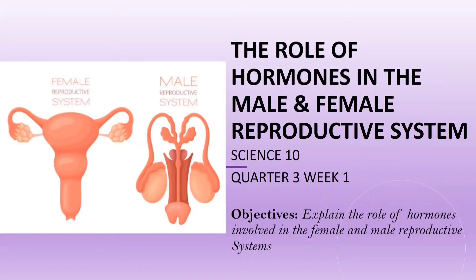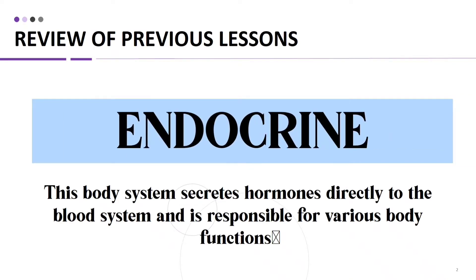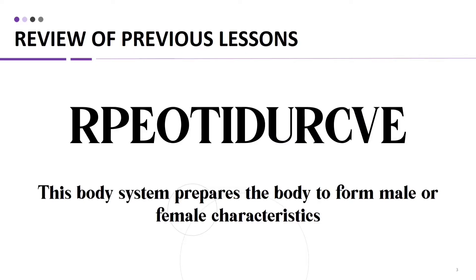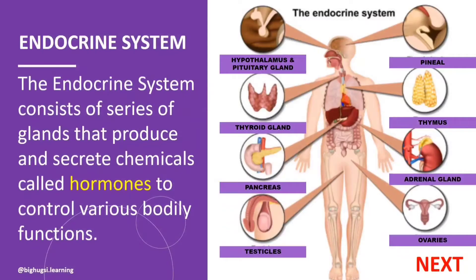Now let us review our previous lessons. Arrange the letters to form a word. This word means that this body system secretes hormones directly into the blood system and is responsible for various body functions. The answer is endocrine. Next word: it means that the body system prepares the body to form male and female characteristics. The answer is reproductive system.